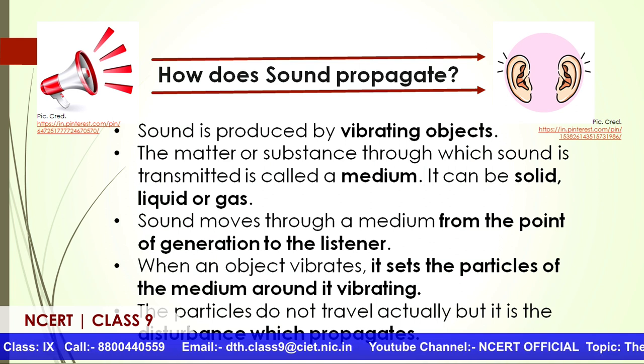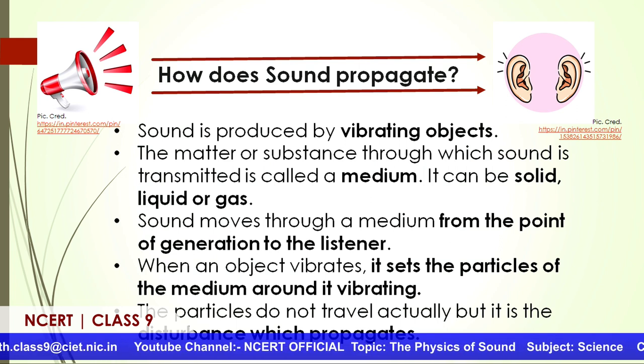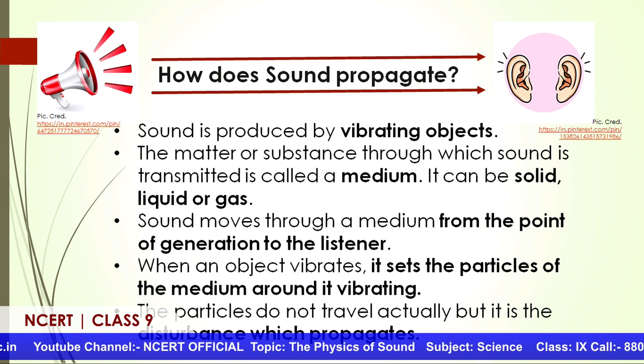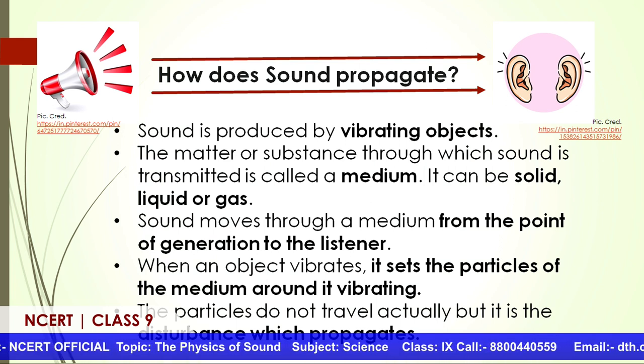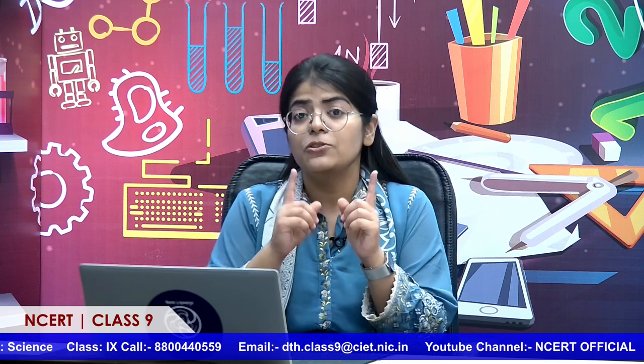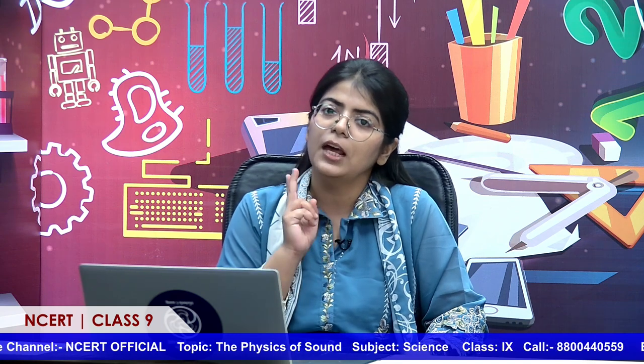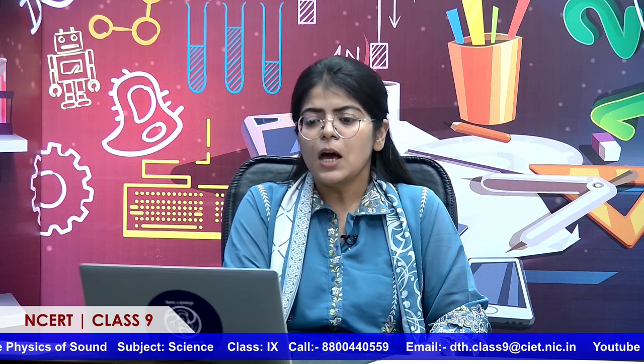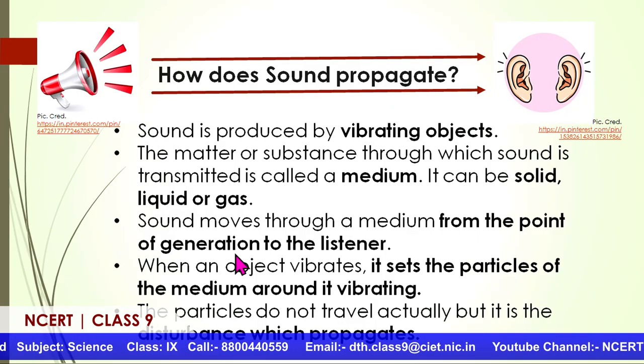As mentioned, I am speaking and you are listening, so there has to be something in between transforming this energy from my vocal cords to your ears. Sound requires a medium — sound energy requires a medium to propagate. Sound is produced by vibrating objects. The matter or substance through which sound is transmitted is called a medium. Sound can travel through solids, liquids, and gases, though the properties are different. Sound moves through a medium from the point of generation to the listener.